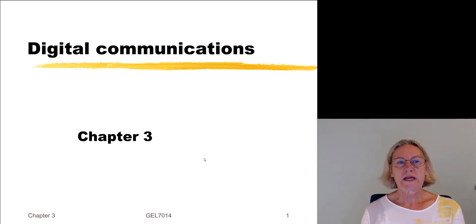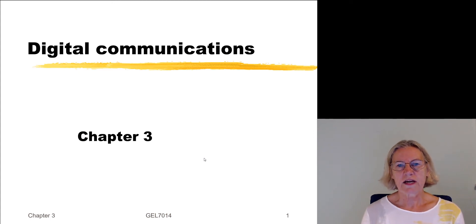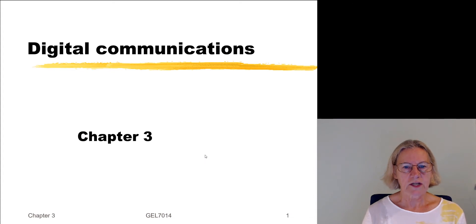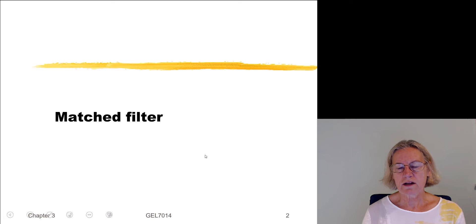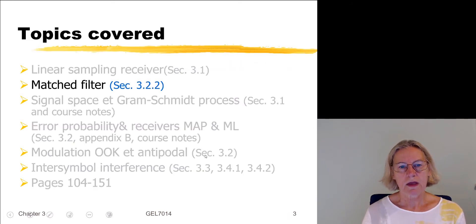We'll be continuing today with covering chapter 3, and in particular we'll be looking at the matched filter, a very important concept for the linear sampling receiver, and this is covered in section 3.2.2 of the SCLAR textbook.